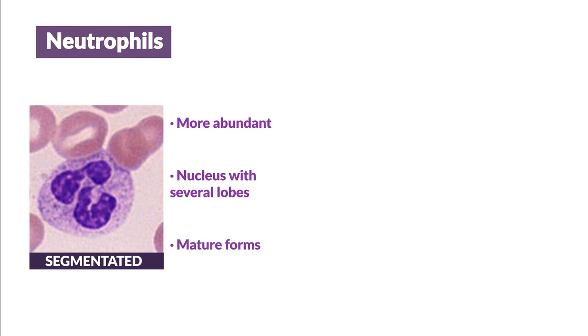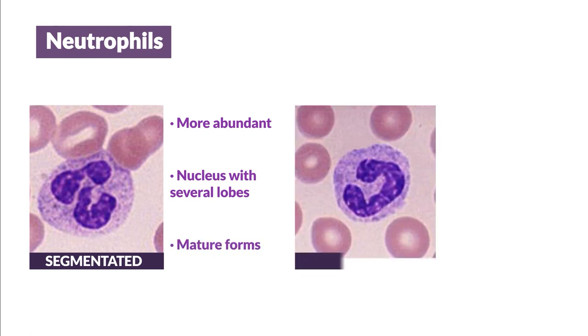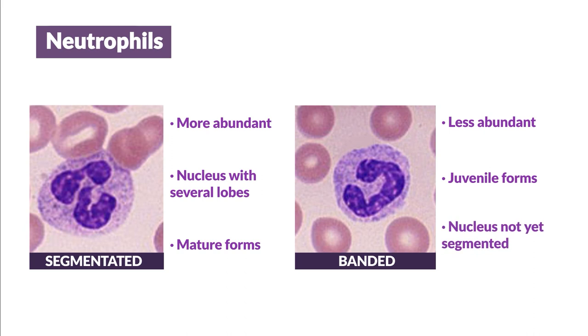Two types of neutrophils can be distinguished. The most abundant being segmented neutrophils which, as their name suggests, have a nucleus with several lobes linked by chromatin and can therefore also be called polymorphonuclear and correspond to mature neutrophils. Banded neutrophils are less abundant and correspond to juvenile forms whose nuclei are not yet segmented and therefore appear as a band, hence their name. The total number of neutrophils in a normal blood sample is usually between 50 to 70% of the leukocyte formula.